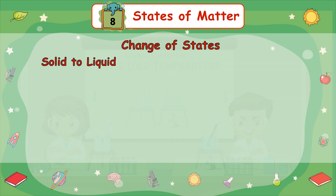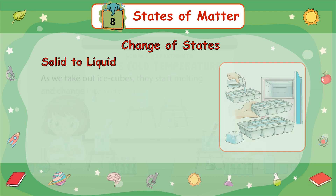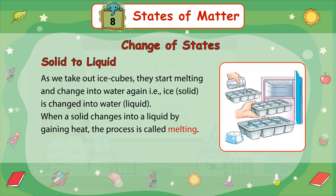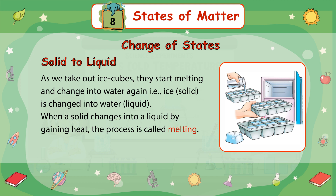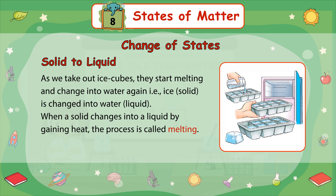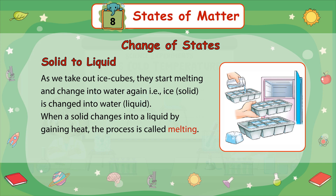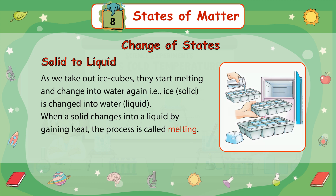Solid to Liquid: As we take out ice cubes, they start melting and change into water again — that is, ice (solid) is changed into water (liquid). When a solid changes into a liquid by gaining heat, the process is called melting.